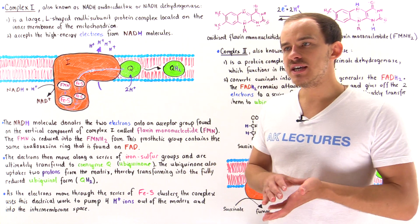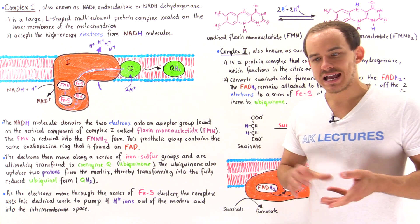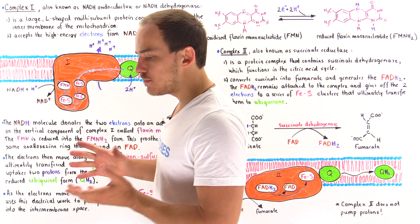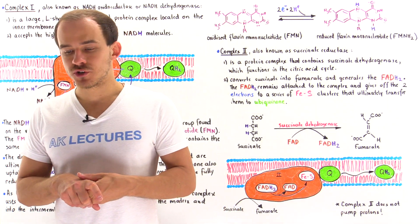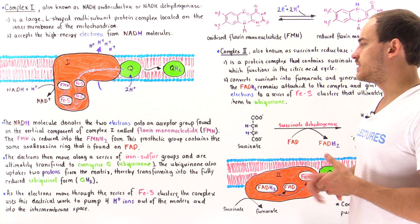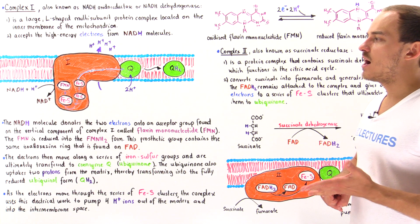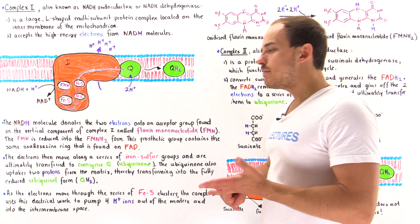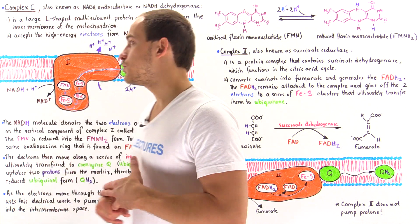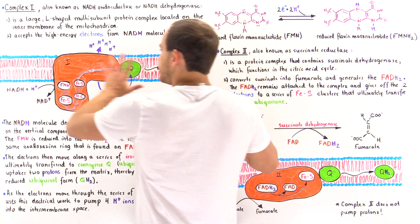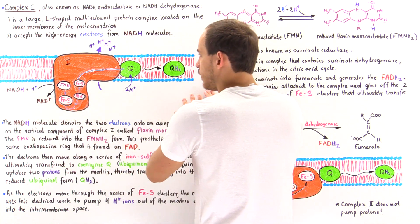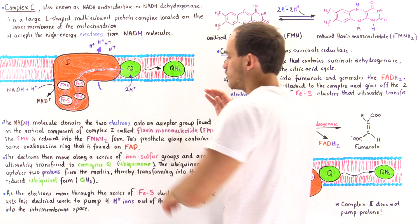Now that we have a general idea of what the electron transport chain actually does, let's discuss the details of what happens in the complexes. We'll begin by examining complex 1 and complex 2. These complexes are found in the inner membrane of the mitochondria. This is the matrix of the mitochondria, and this is the intermembrane space.